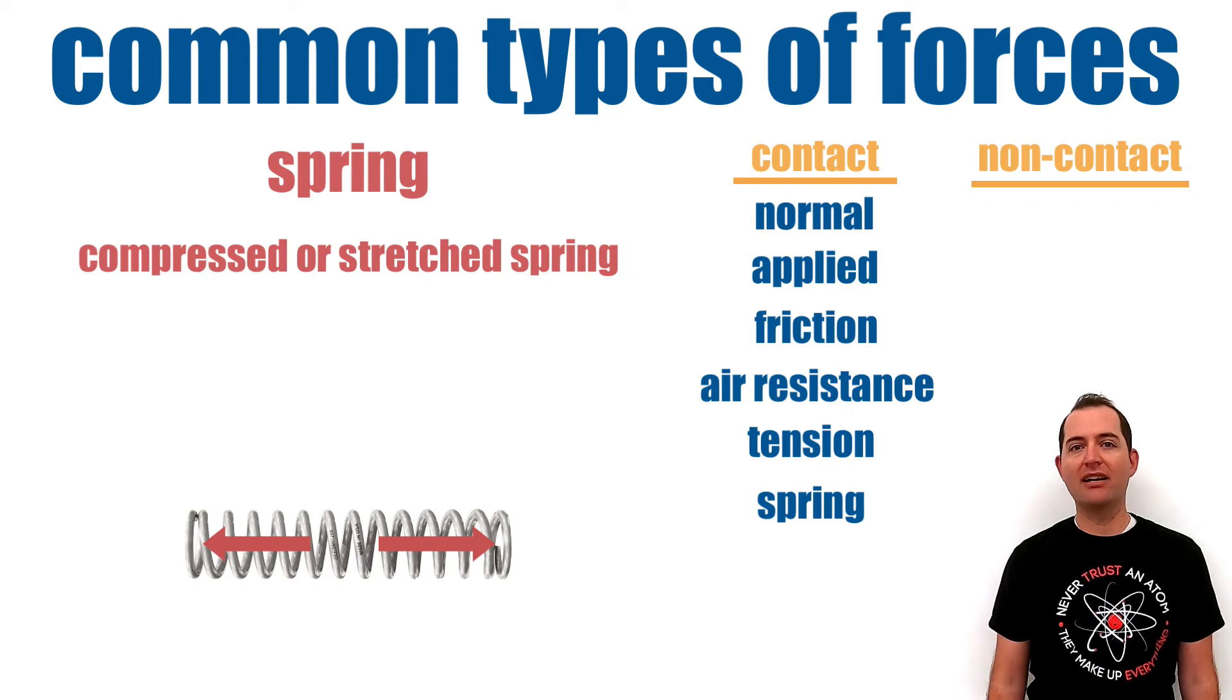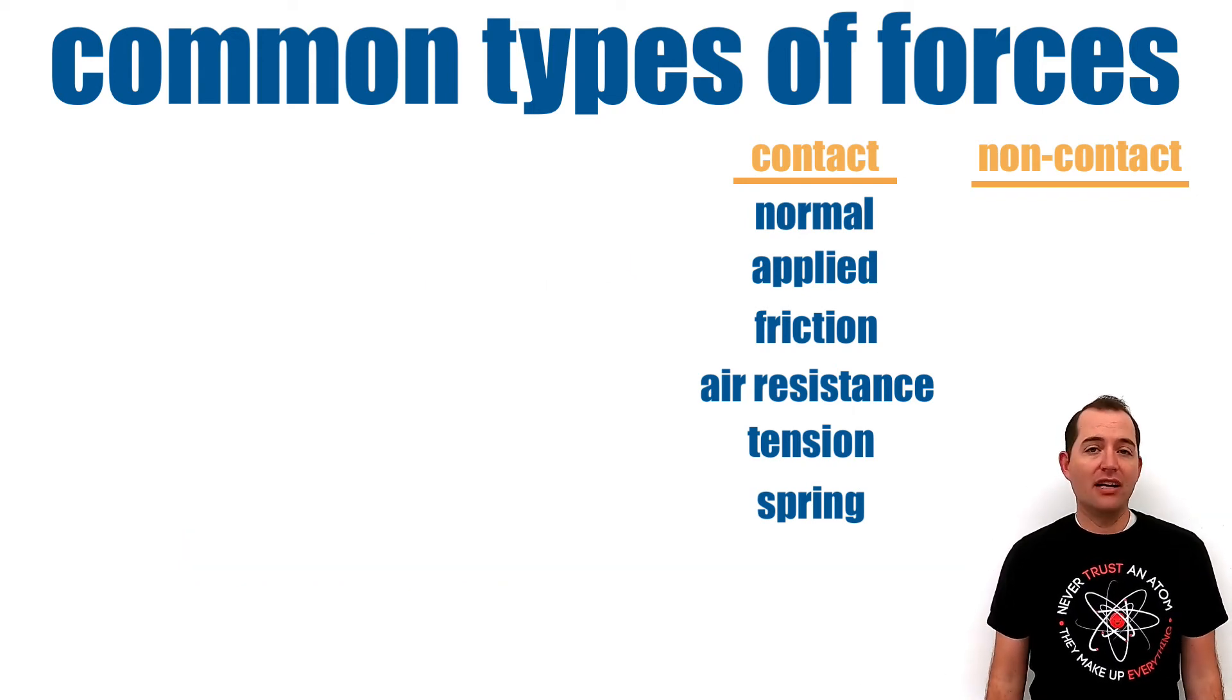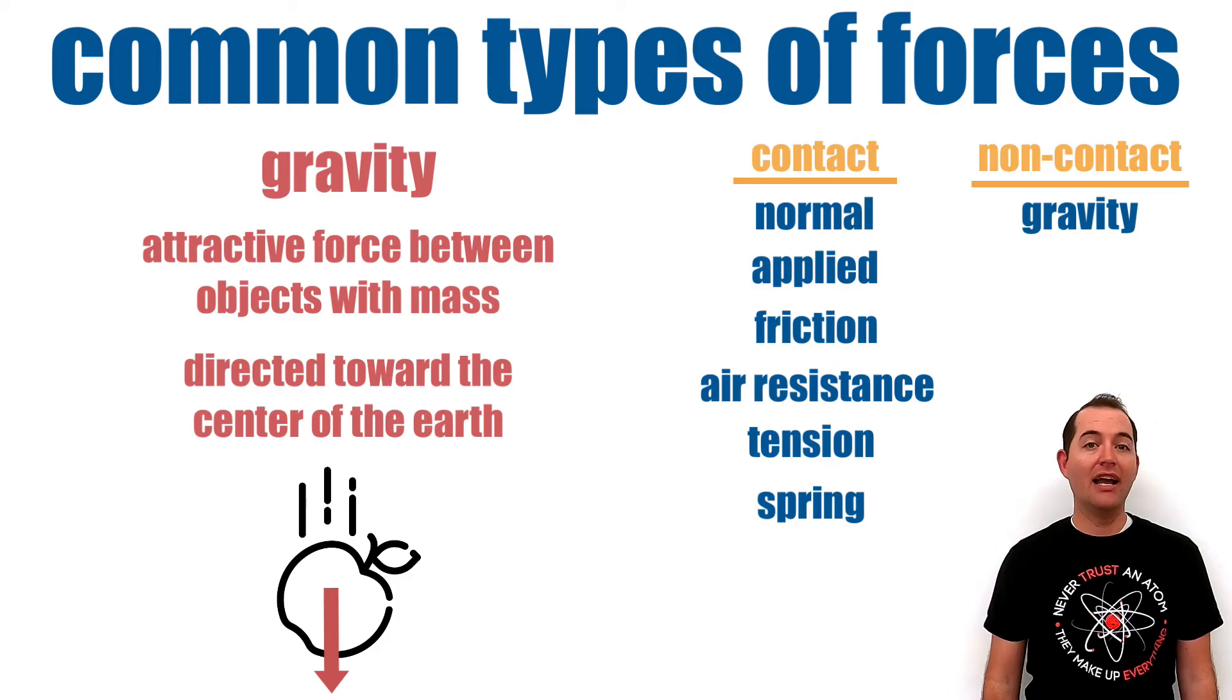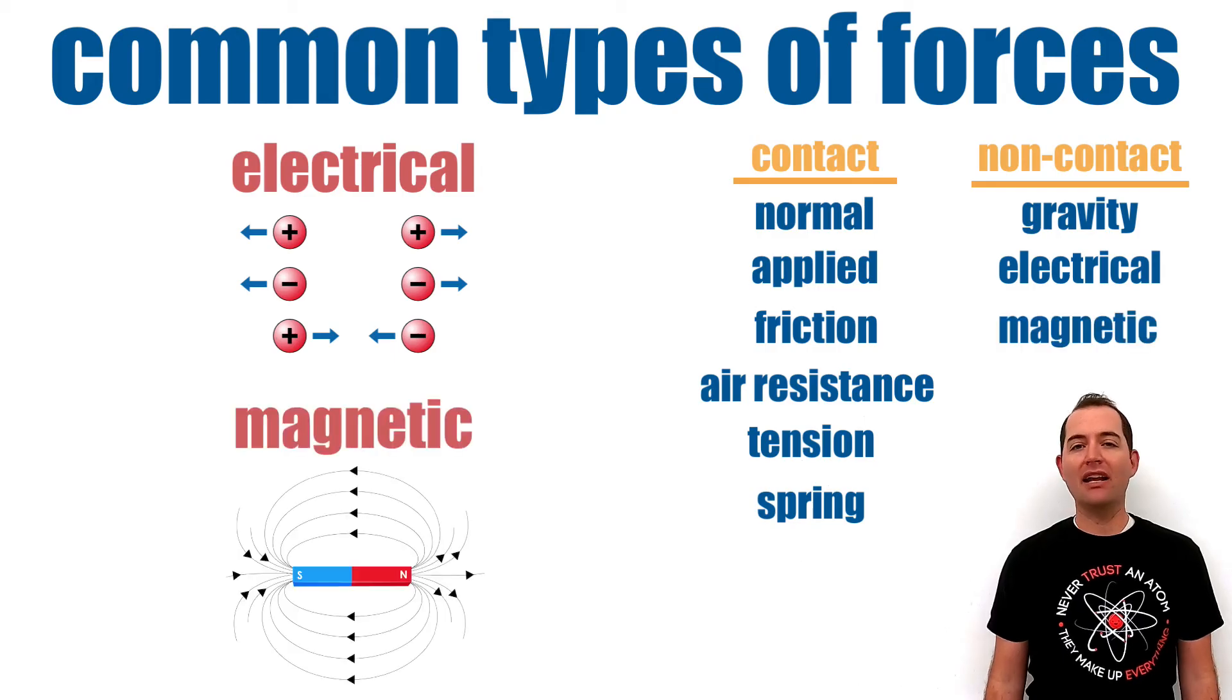The spring force is exerted by a compressed or stretched spring. The most common non-contact force is gravity. Gravity is the attractive force between any two objects with mass, and on earth this is always directed toward the center of the earth. Electrical and magnetic forces are also non-contact forces.